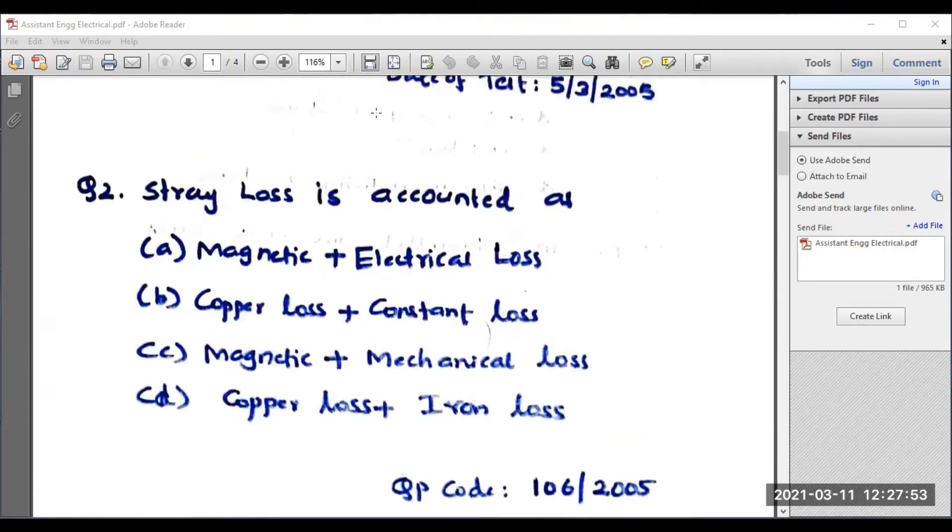Let me move on to question number two. Stray loss is accounted as magnetic and electric losses, copper losses plus constant loss, magnetic and mechanical losses, or copper loss and iron losses. Normally, magnetic losses and mechanical losses are collectively known as stray losses. This is very important. You can opt option C.